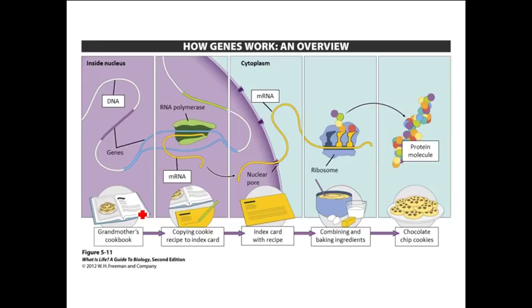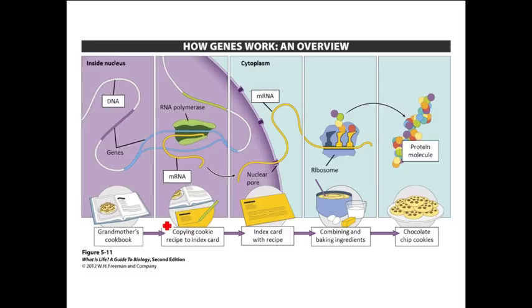A great analogy for this is the idea of using a cookbook to make a recipe. Imagine you had a really old recipe that you wanted to keep because it was your only copy. You wouldn't want to take that recipe into the kitchen because it might be damaged — you might spill something on it. So you would copy that recipe, say a cookie recipe, onto an index card that you can take into the kitchen, and use it to combine all the ingredients to make the final product — cookies in this case. The old recipe is like the DNA: it's the original copy of the information, and you don't want something to happen to it.